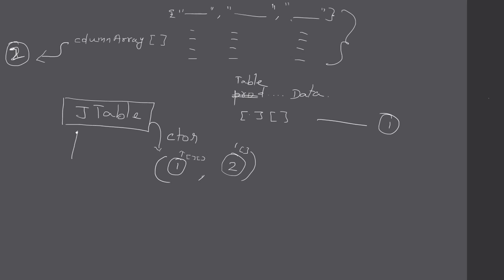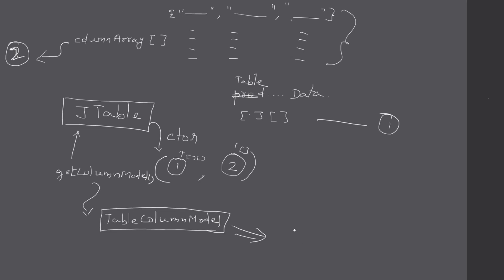To change column width, we make a call to the JTable function getColumnModel(). This returns a TableColumnModel object, which we use to customize the column. We retrieve the specific column — in our case the product description column — and then increase its width. After constructing JTable with the column array and data, we retrieve the column model and increase the length.